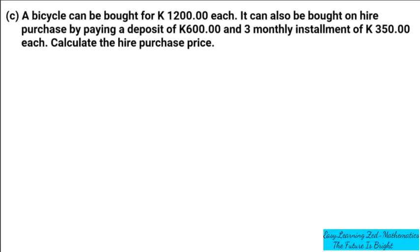So question 6 was as follows. A bicycle can be bought for 1,200 kwacha each. It can also be bought on hire purchase by paying a deposit of 600 kwacha and 3 monthly installments of 350 kwacha each. Calculate the hire purchase price.